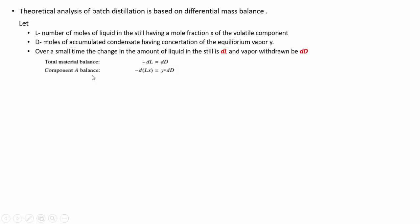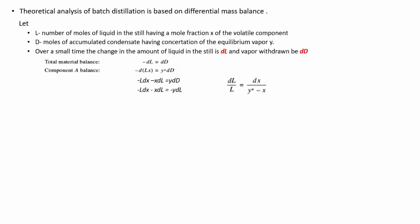Making a component balance on component A gives: d(Lx) = y* dD, where y* is the equilibrium vapor concentration. Expanding: minus L dx minus x dL equals y* dD. Since dD equals minus dL, substituting and rearranging finally gives: dL/L = dx / (y* - x).